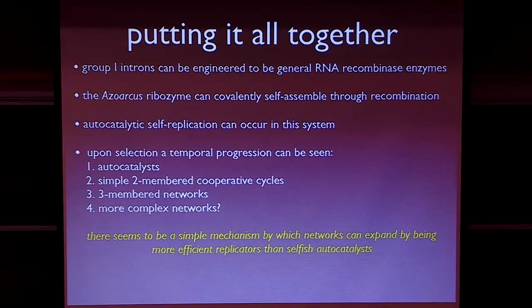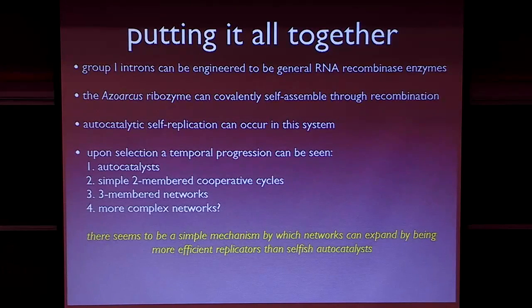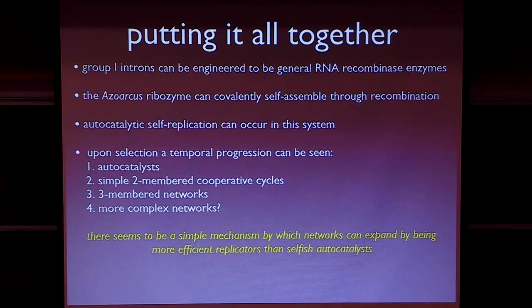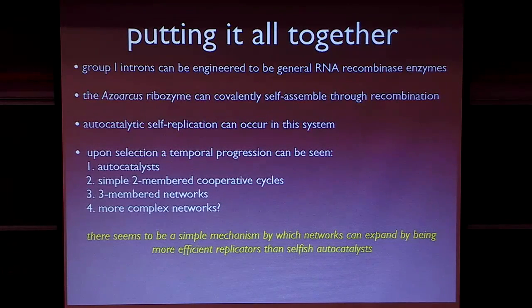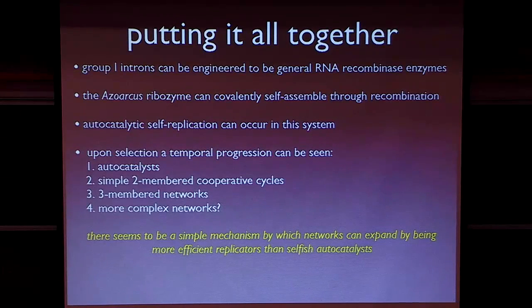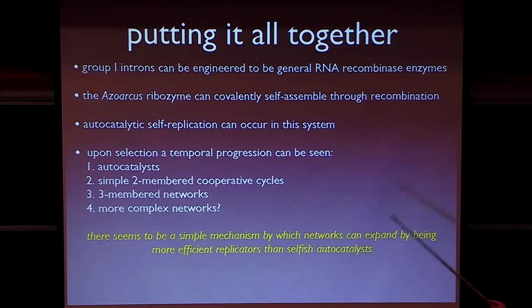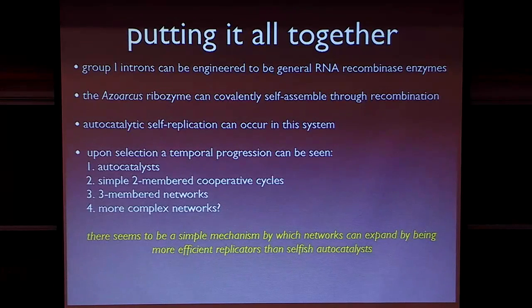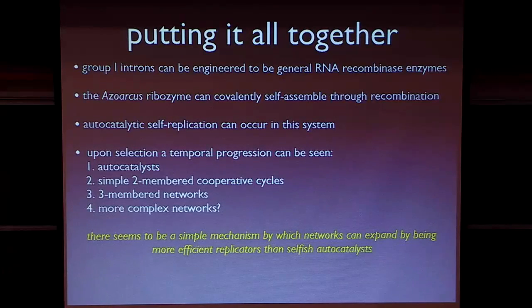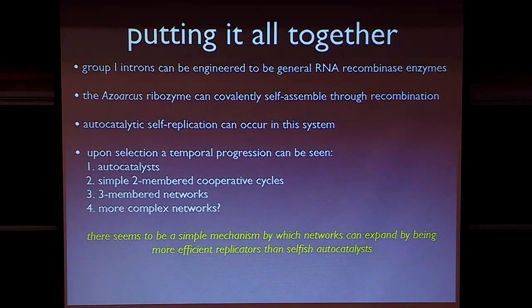All right, so what I've told you today is that, first of all, that group 1 introns can be engineered to be generalized RNA recombinases. Second, that the azoarchus ribozyme can put itself together basically through a series of recombination reactions. We can get a crude sense of self-replication in this system. And we see a whole bunch of type of assembly-type things like autocatalysis, two-membered networks, three-membered networks, very complex networks. So this is cooperation at the molecular level, and we think it has relevance to the origins of life itself.